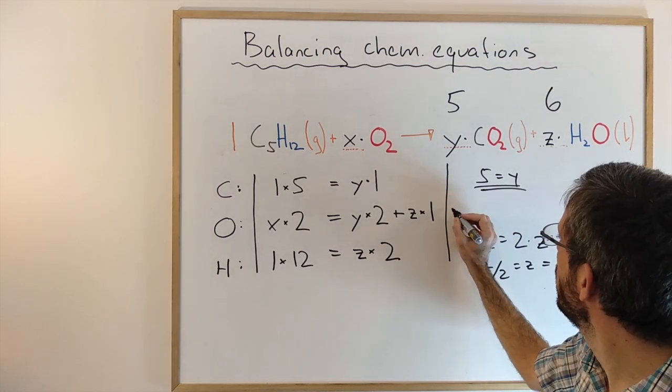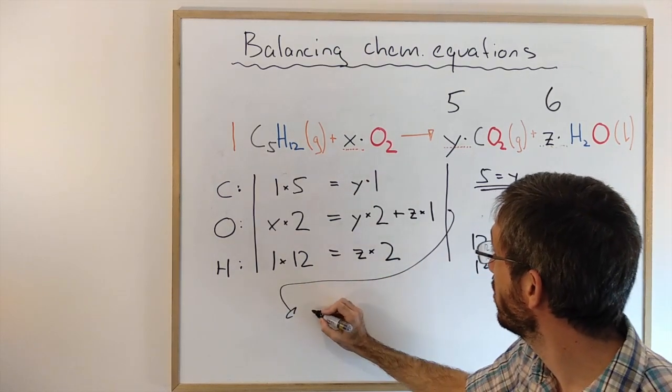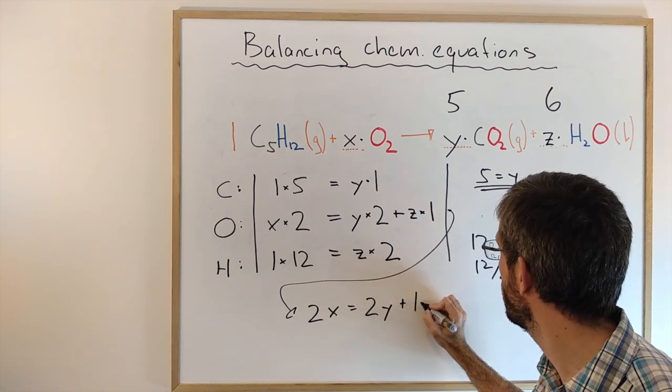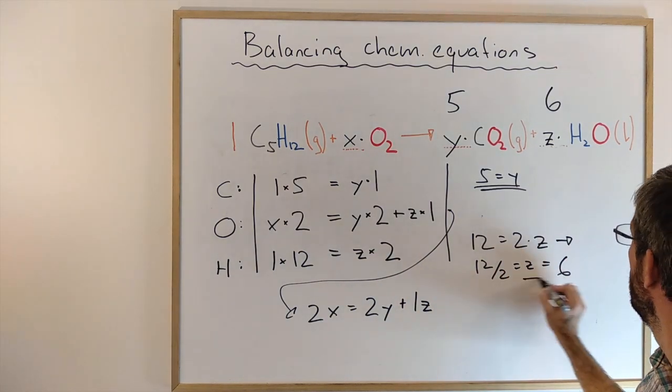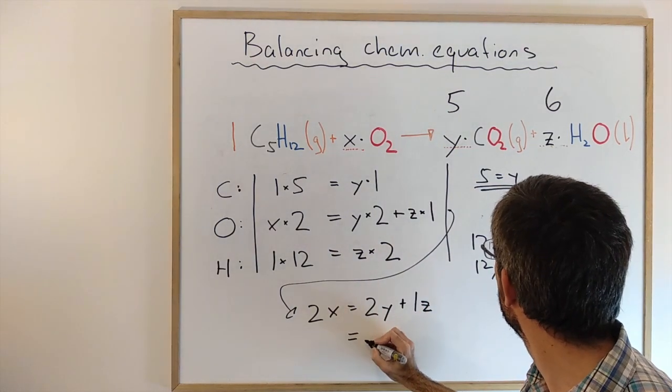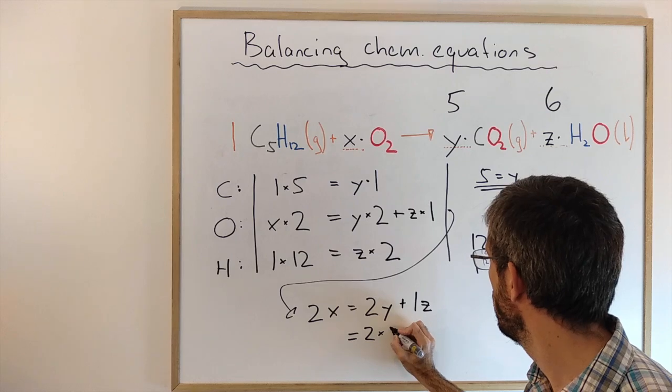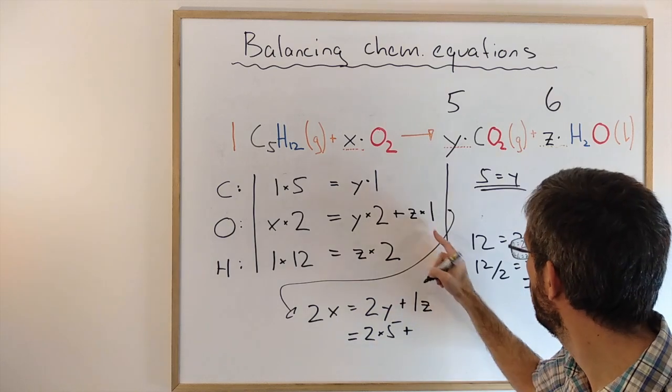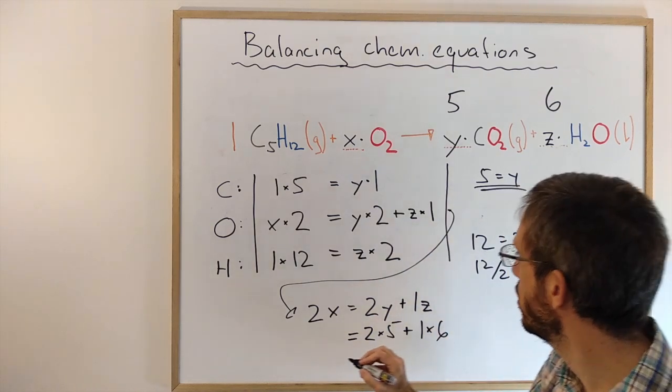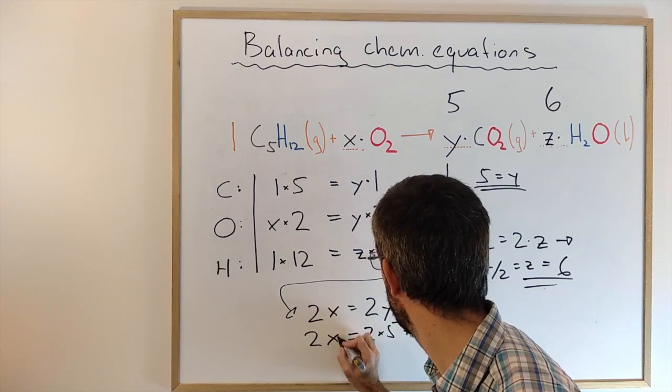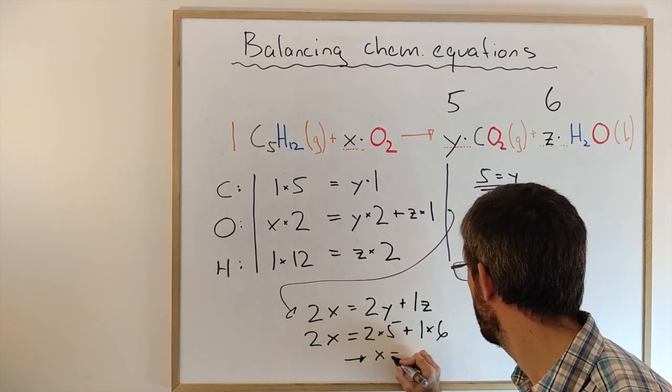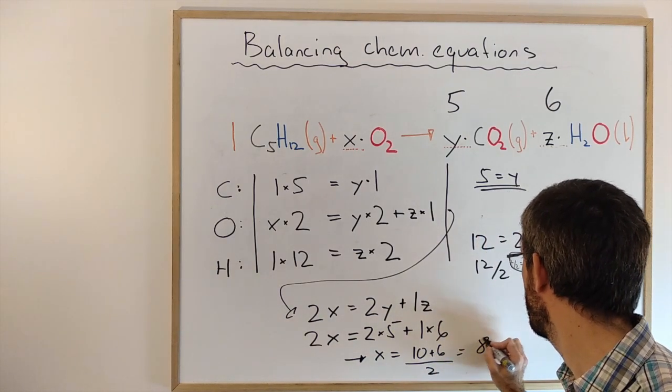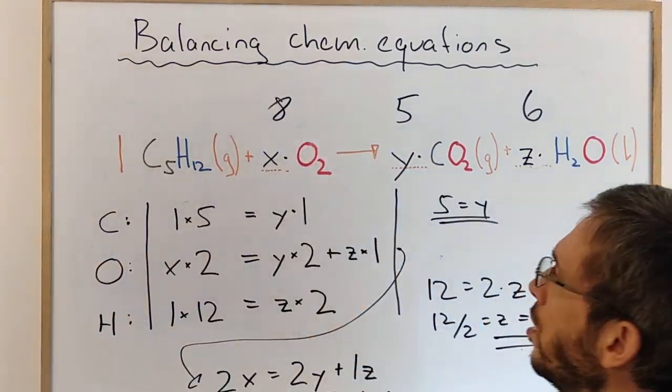And now for my equation here, I'm going to take it down. It's a bit more complicated. I have 2 times x equals 2 times y plus 1 times z. I already know that y is 5, so the right side I can write 2 times 5 plus 1 times 6 equals 2 times my x. I know that x is 10 plus 6 divided by 2, which is 8. It gave me the same answer as before.